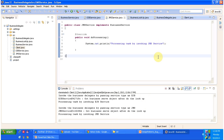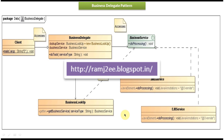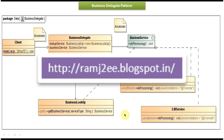This is the sample code of the business delegate design pattern. I have put all the sample code on my blog at romj2ee.blogspot.in. If you want to get the sample code, you can log in to my blog and get it. This is about business delegate design pattern implementation. Thanks for watching. Bye.